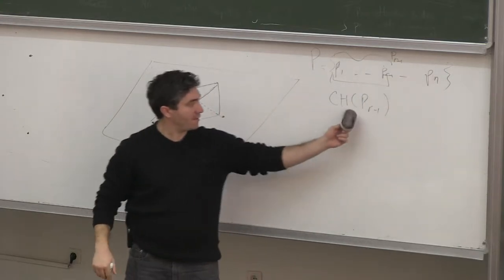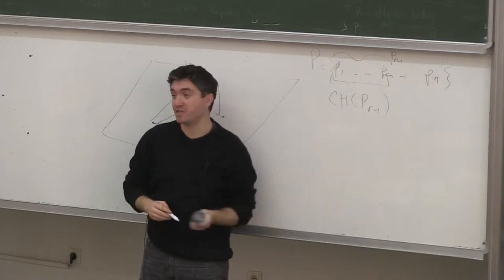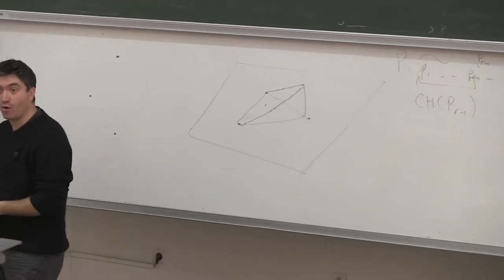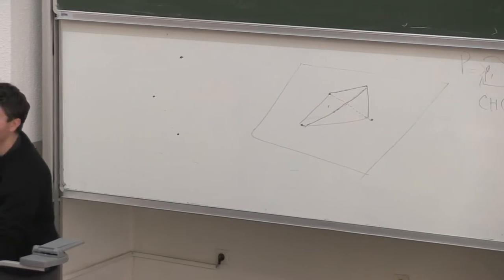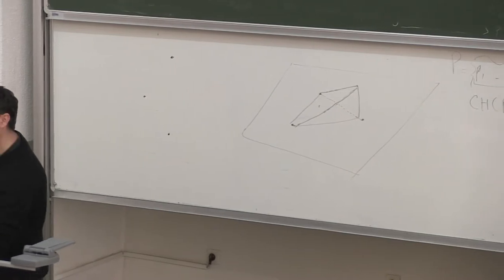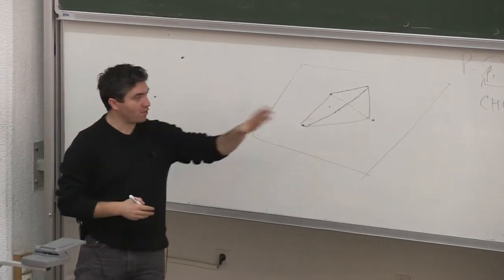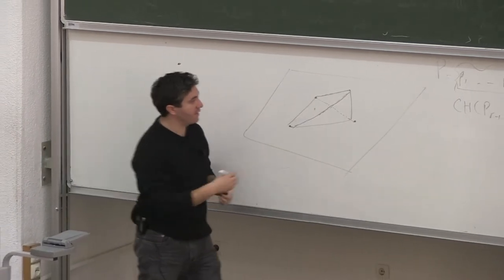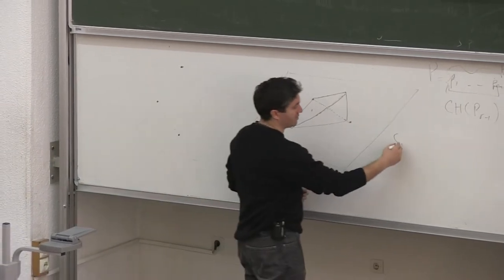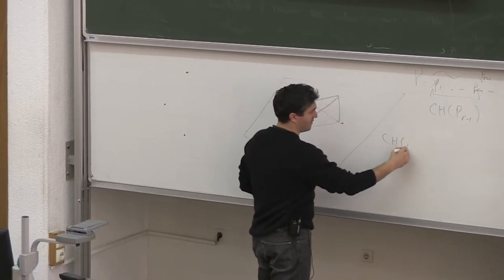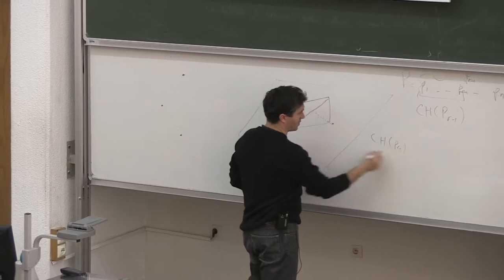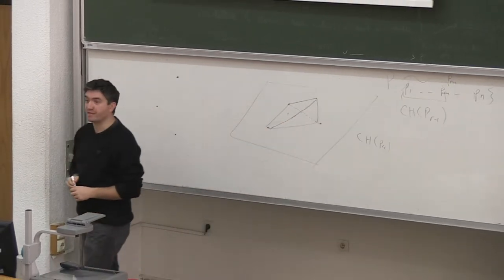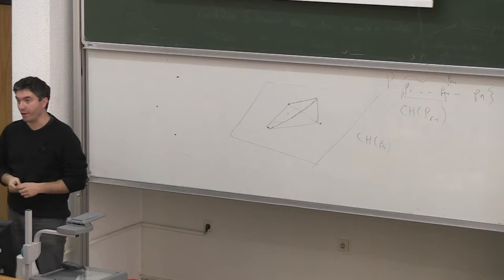So CH P_{r-1} denotes the convex hull of the first r minus 1 points. For example, CH P4 is going to be the convex hull of the first four points.